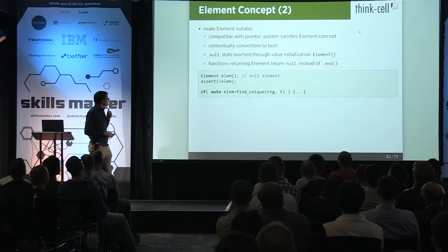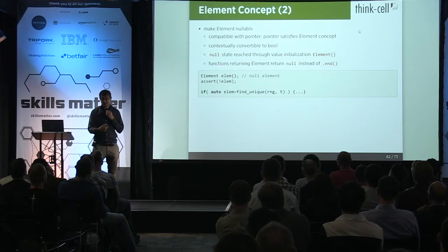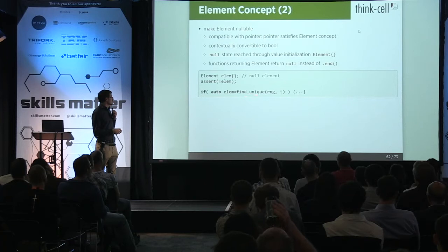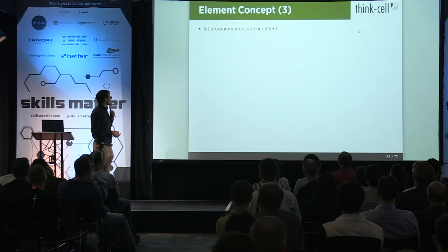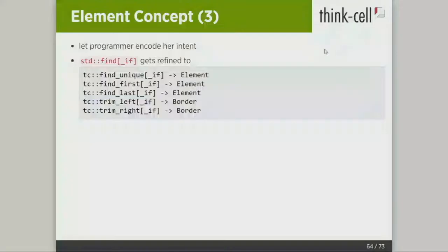Functions returning an element would return null instead of end, so you can write: auto element = find(range) — clean and simple. This lets people encode their intent better. We have a distinction between find_unique, find_first, and find_last, which return elements. There are also trim_left and trim_right which eat away parts of the sequence and return borders. You're telling a story in your program and I think you should tell the reader: am I looking for a border or am I looking for an element?